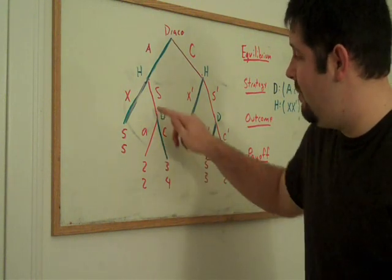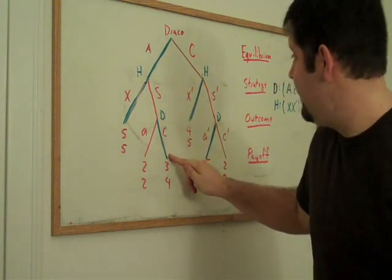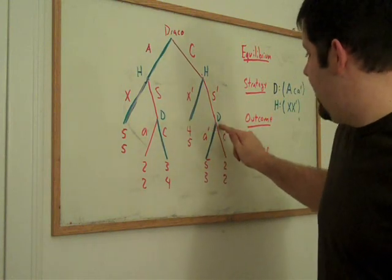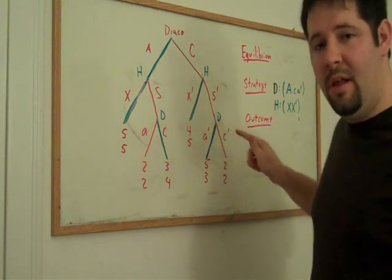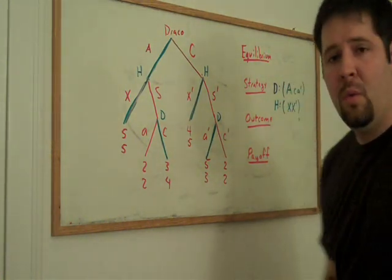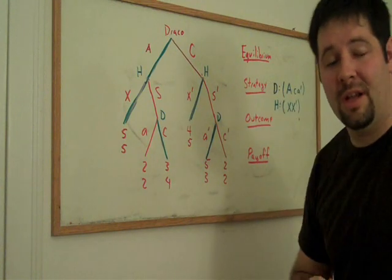We can also see that if we actually got to this node, Draco would play spell C. If we got to this node, Harry would play spell X. If we got to this node, Draco would play spell A'. Now, these are all specified in these strategies which are the equilibrium strategies that are a best response to one another.